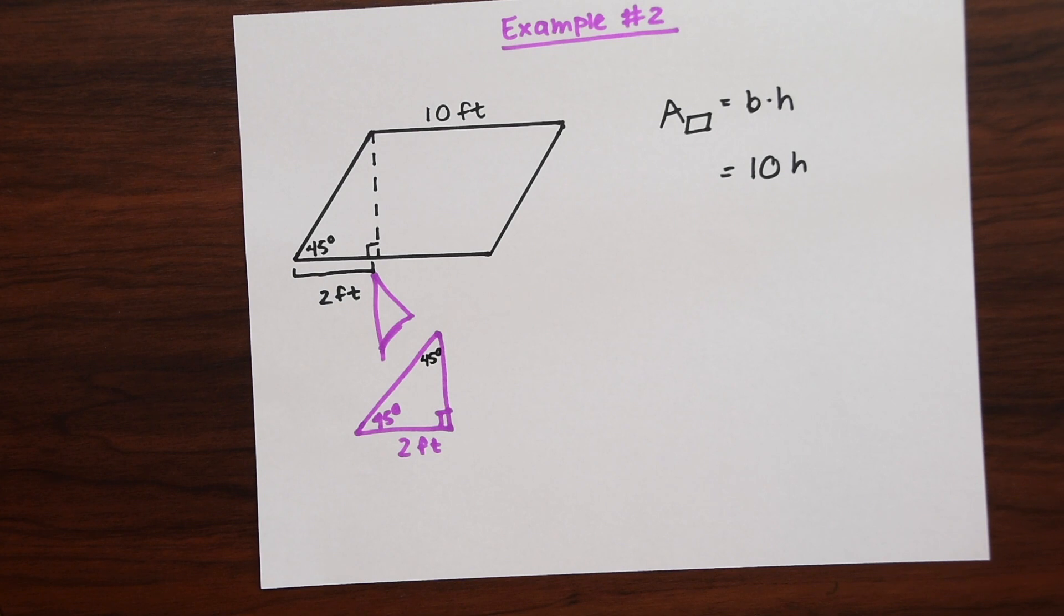So that should sound familiar because we learned about special triangles before. And if you don't remember I do have a video on that you can check out. But something special about these 45-45-90 special triangles is that there's a special ratio that they have with the sides. And once you know one side you can find the other two if there's missing sides.